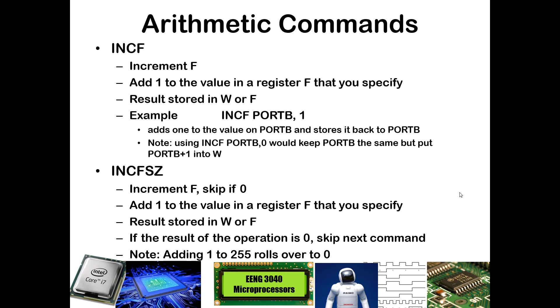The one added functionality that comes with INCFSZ is it has this skipping if zero. So if you were to increment a value and that value prior to incrementing was 255 decimal or FF hex, it filled up the entire 8-bit register with 1s, then after the incrementing it would roll back over to zero. If that were to happen, this would skip to the line after the next line of code, skip over the next line of code. This is very useful to developing things like for loops, which we will talk about in a future lecture.